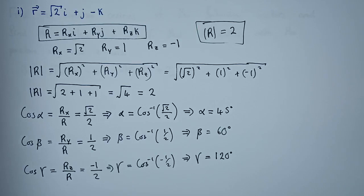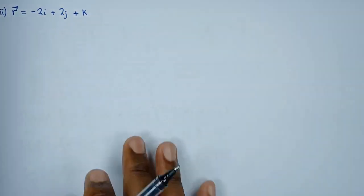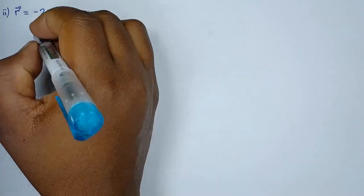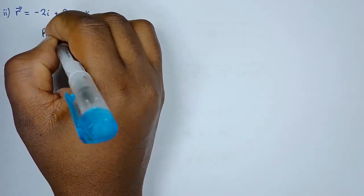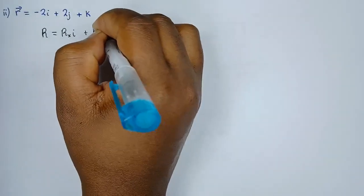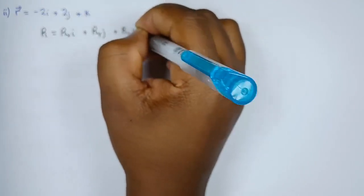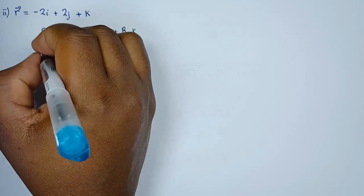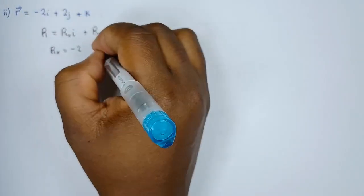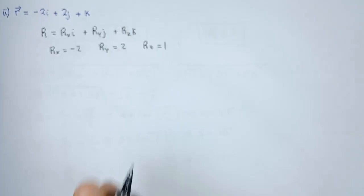Let's do the second vector as well. So this is the second vector — same procedure. We compare it to r = r_x·i + r_y·j + r_z·k, meaning that r_x is −2, r_y is +2, and r_z is 1.